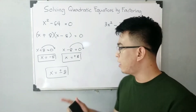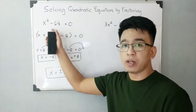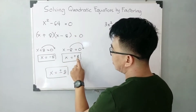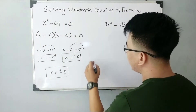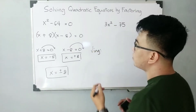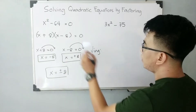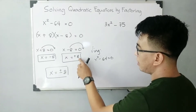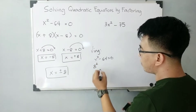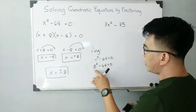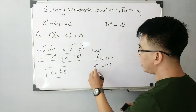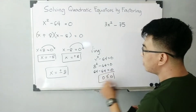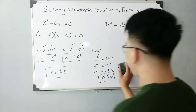Are you sure that positive or negative 8 can make the equation equal to zero? Yes — let's check. If we use positive 8 in place of x, it becomes 8 raised to the second power minus 64 is equal to zero. We know that 8 squared is 64, so 64 minus 64 equals zero. Zero is equal to zero, meaning our answer is correct.